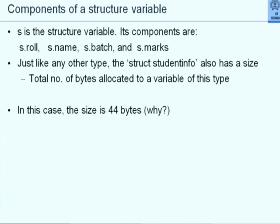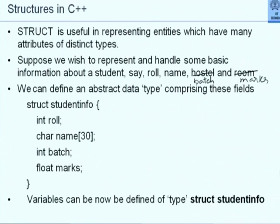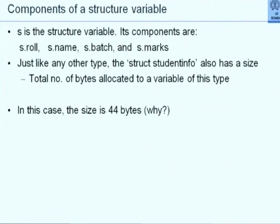And just like any other type, the struct student_info also has a size. What is the size of int? 4 bytes. What is the size of float? 4 bytes. What is the size of a char array? As many bytes as the size of that array — so if it is name[30], 30 bytes. In this particular case the size will be 44 bytes. Unfortunately, if you look at the individual components, they don't seem to add up: int role is 4, char name[30] is 30, giving 34, then int batch adds 4 giving 38, then float marks adds 4 giving 42.